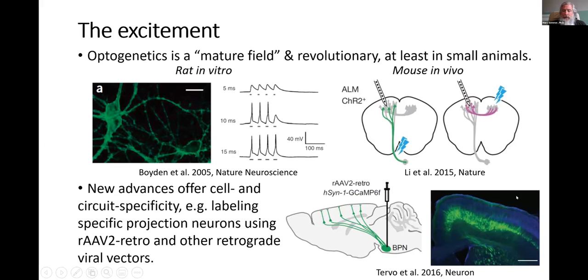More recently, advances have taken place in the design of viral vectors that allow for even greater cell and circuit specificity with less work. You can label specific projection neurons using a vector called rAAV2-retro and other retrograde vectors. If you inject this in an area like the basal pontine nuclei of a rat, it will be transported in the axons of neurons and label specific projection neurons of distant areas, such as in motor cortex.